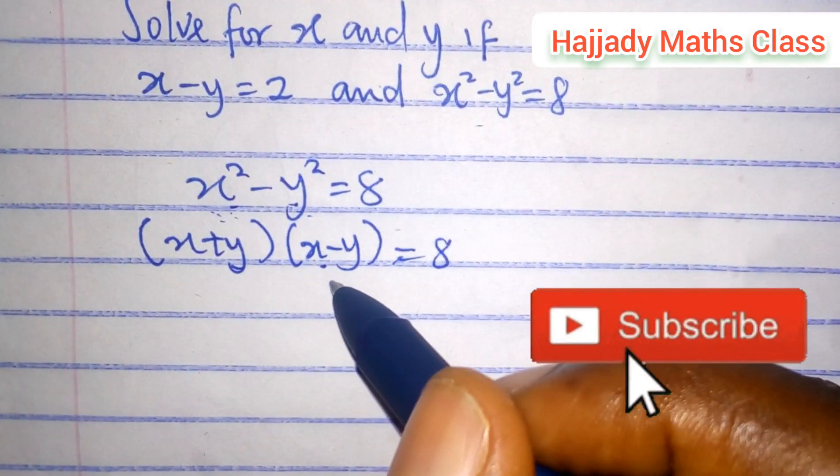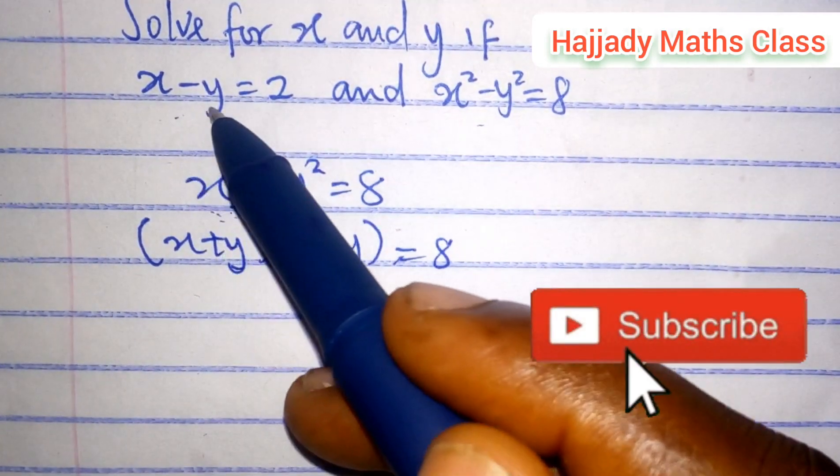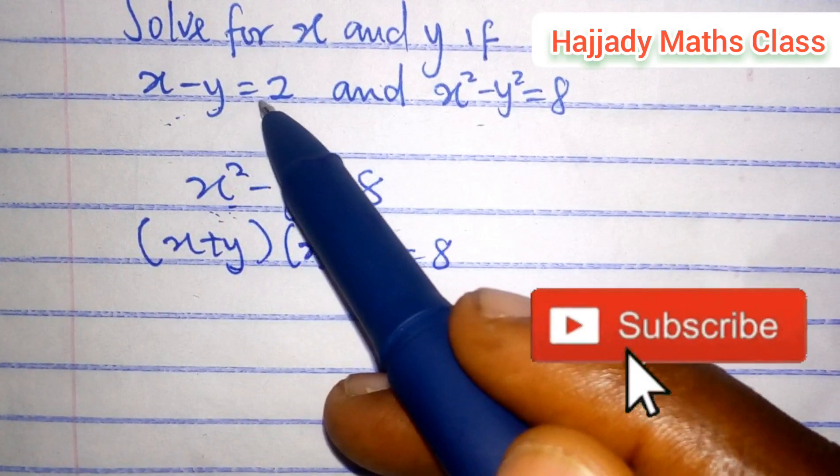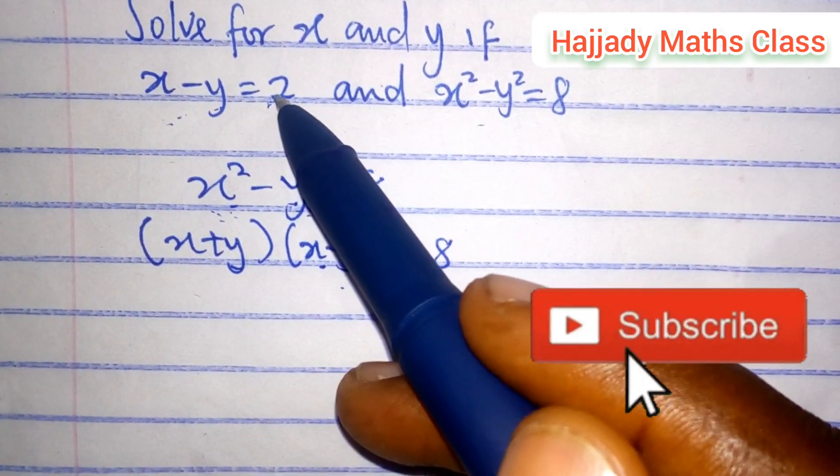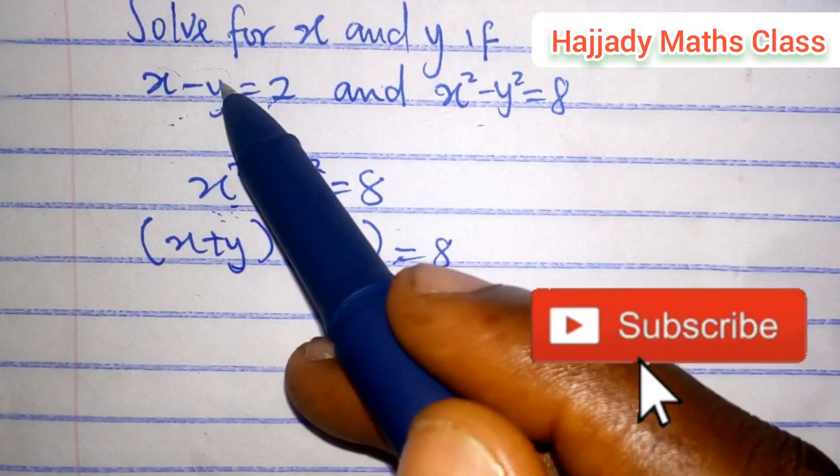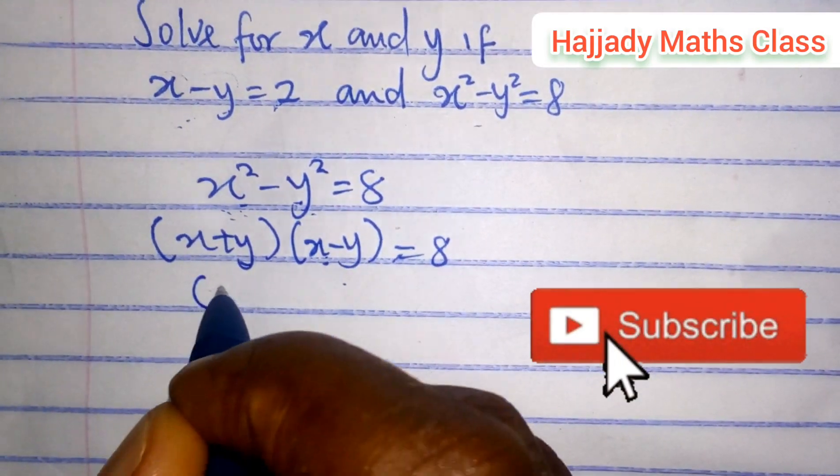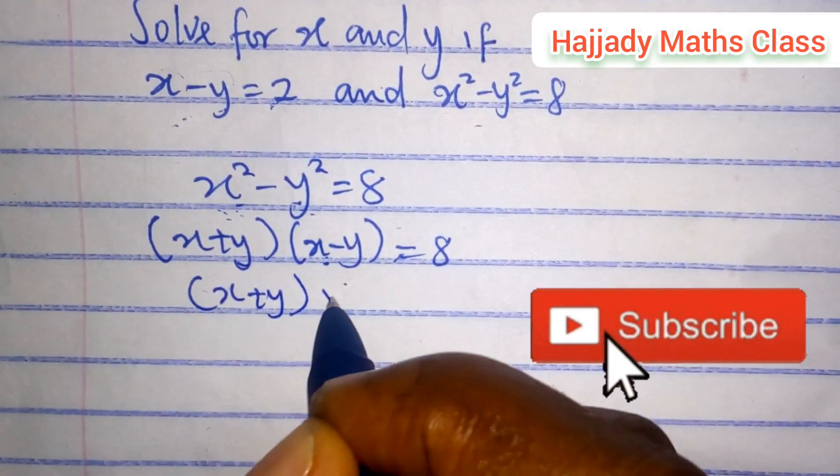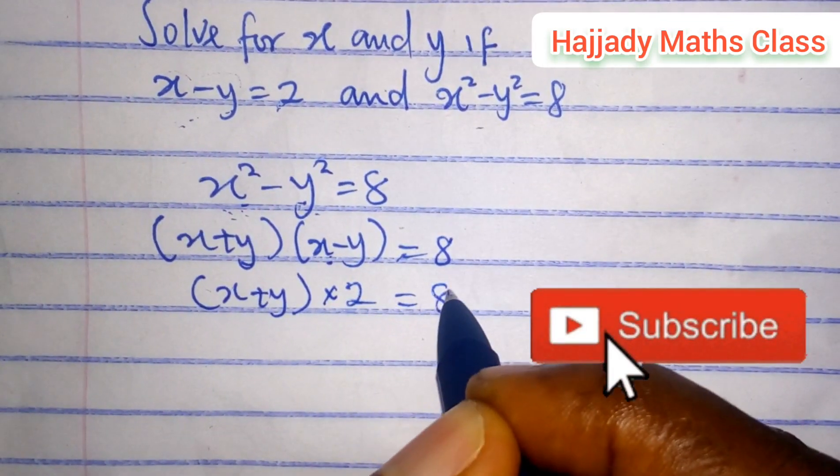And don't forget from the question that x minus y equals 2. So in this case, you substitute this. You replace x minus y with 2. So here we have x plus y times 2 equals 8.